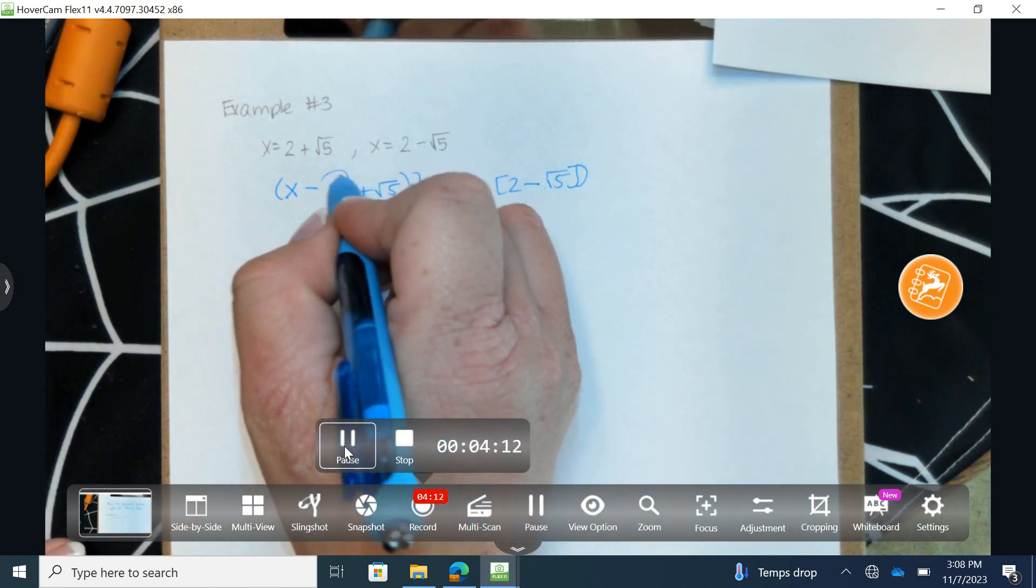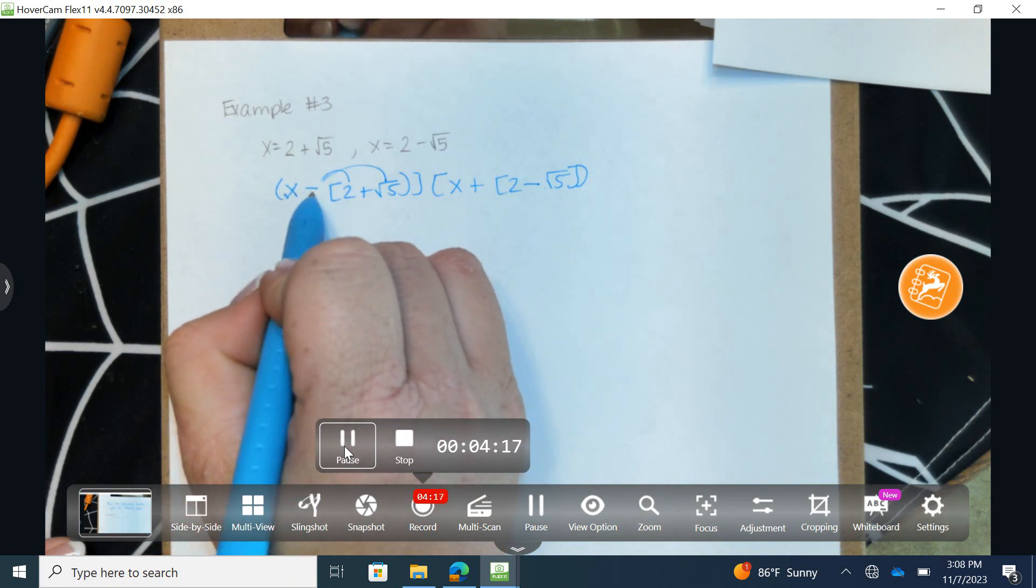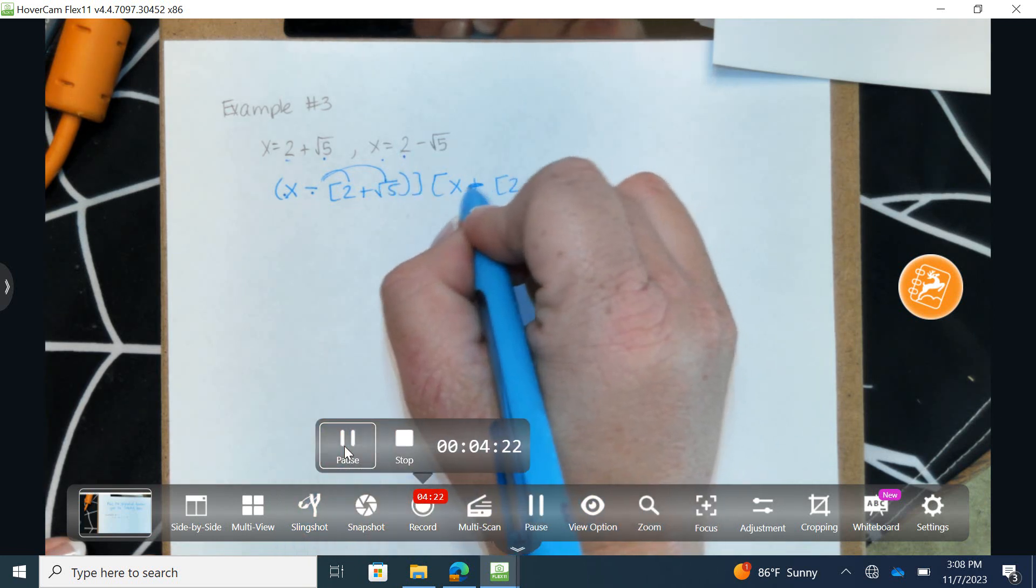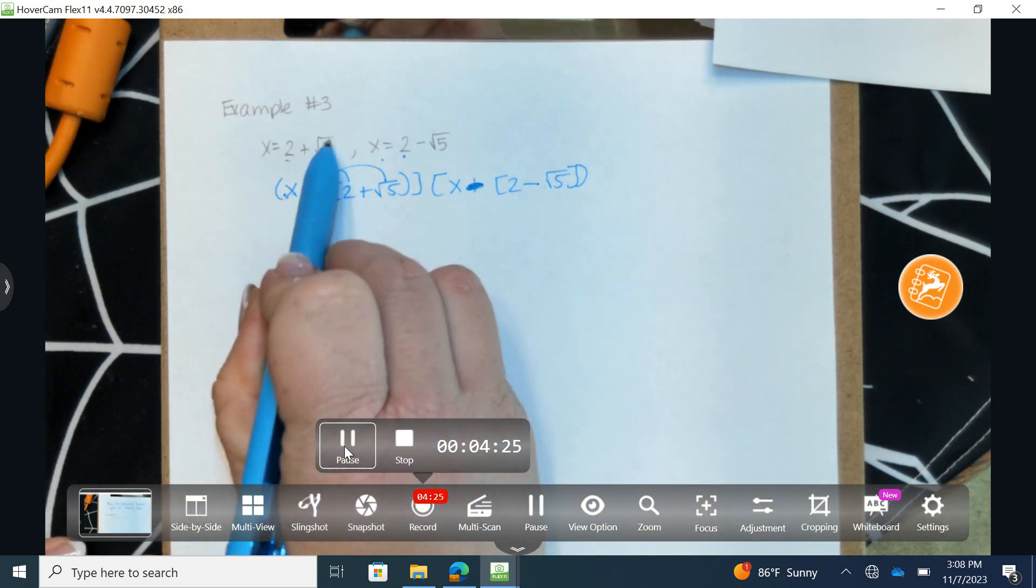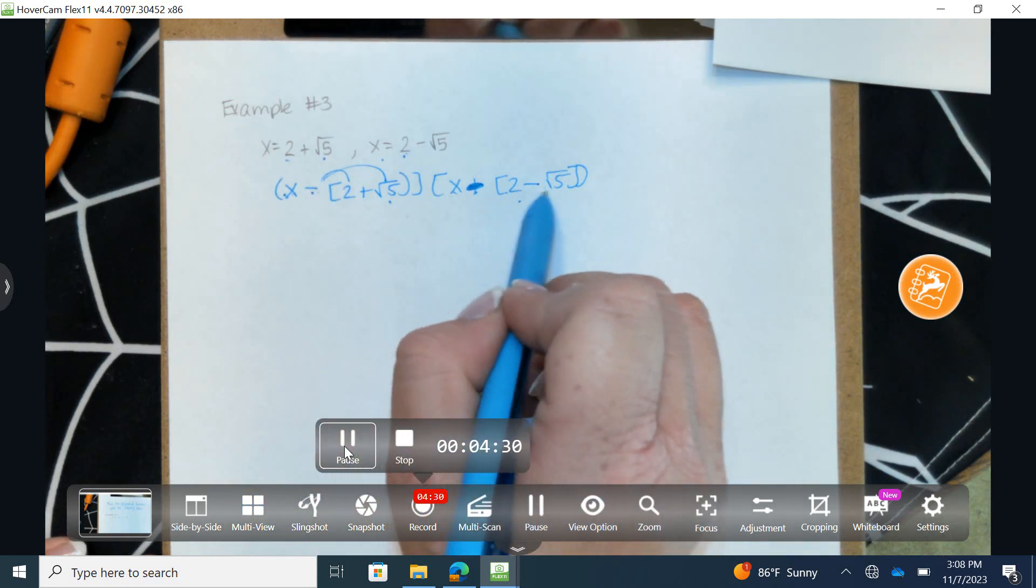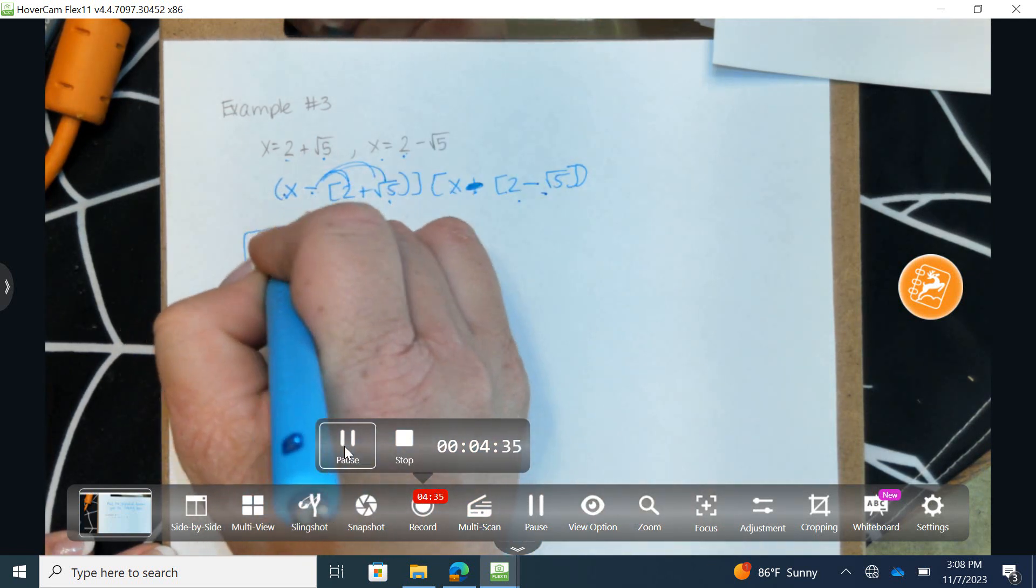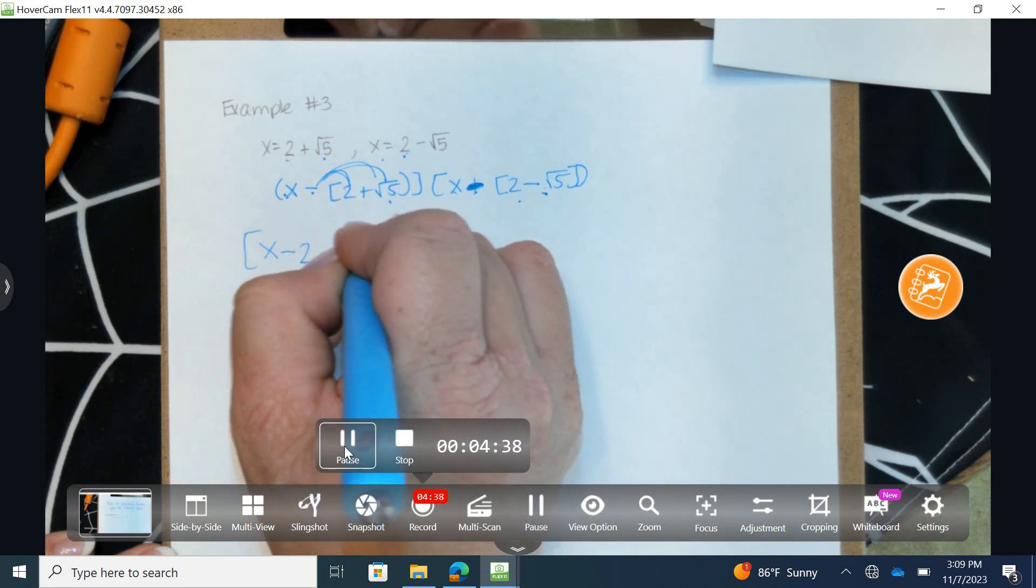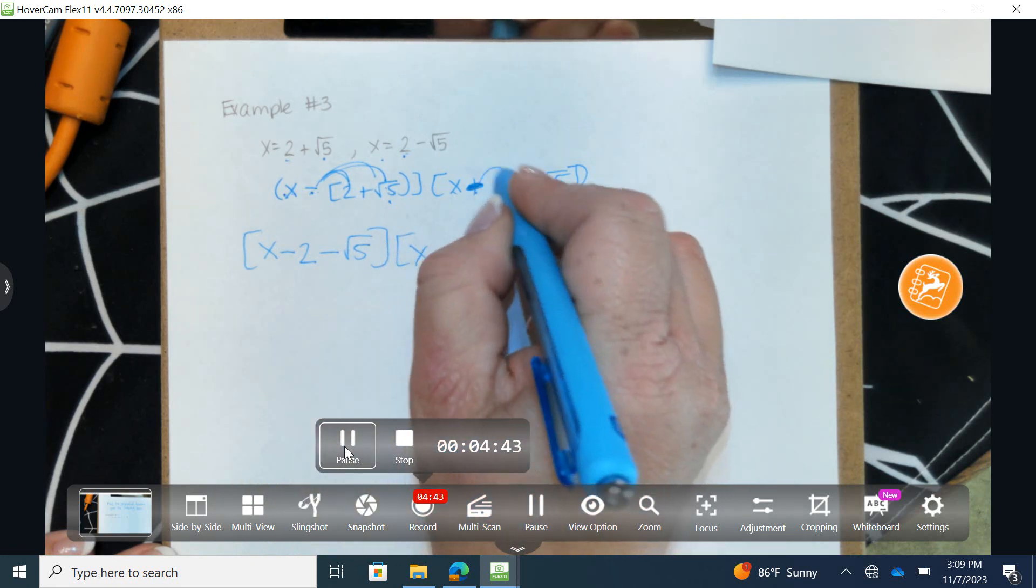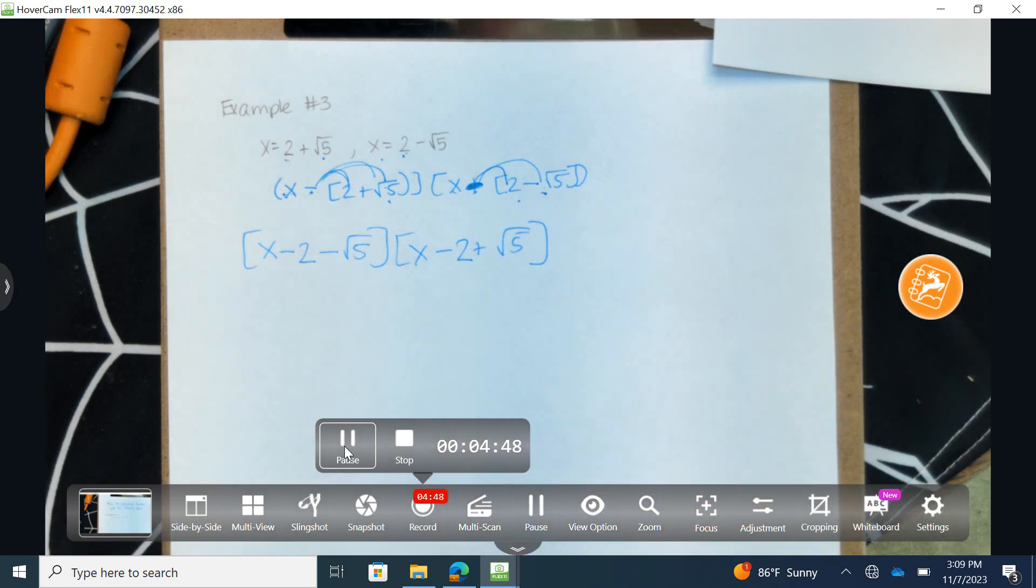Okay, I'm going to start here by distributing this negative sign. So I have x subtract this quantity and x subtract this quantity. Again, x subtract always followed by what you're provided and x subtract with what you're provided as one of the solutions. So I'm going to distribute through to get x subtract 2 subtract the square root of 5. Just distributing the negative sign. And again, I have x subtract 2 plus the square root of 5.